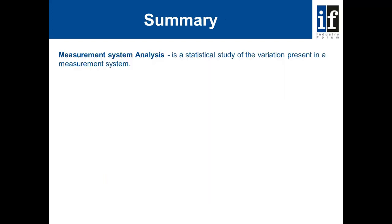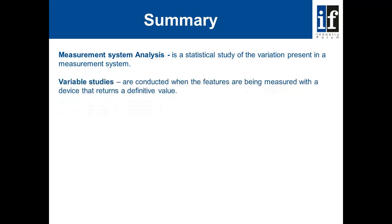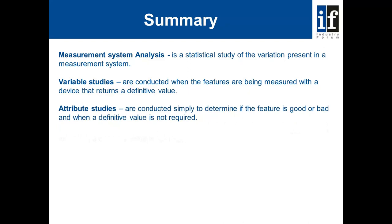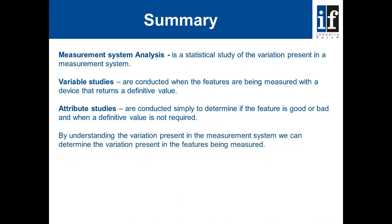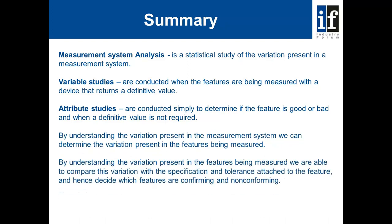To summarize, measurement system analysis is a statistical study of the variation present in a measurement system. Variable studies are conducted when features are being measured with a device that returns a definitive value. Attribute studies are conducted simply to determine if the feature is good or bad, or when a definitive value is not required. By understanding the variation present in the measurement system, we can determine the variation present in the features being measured, and compare this variation with the specification and tolerance to decide which features are conforming and non-conforming.